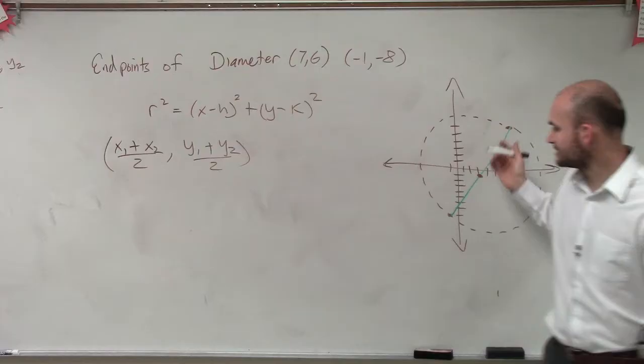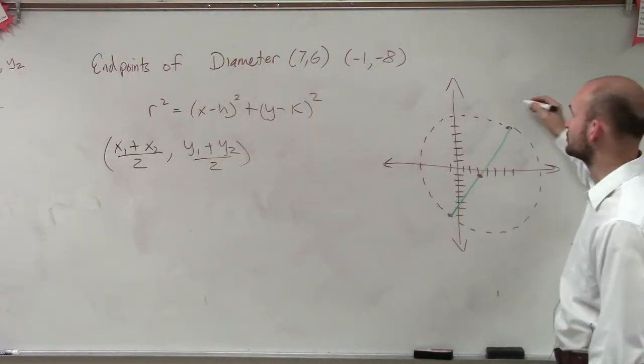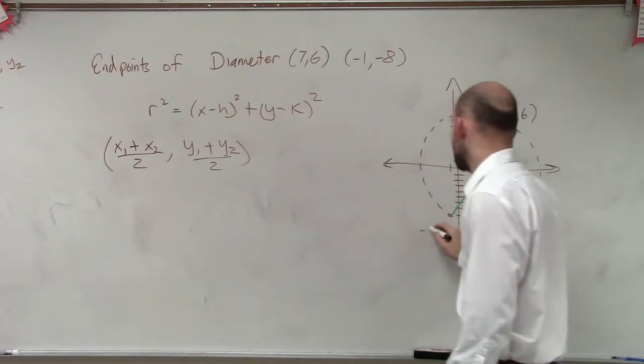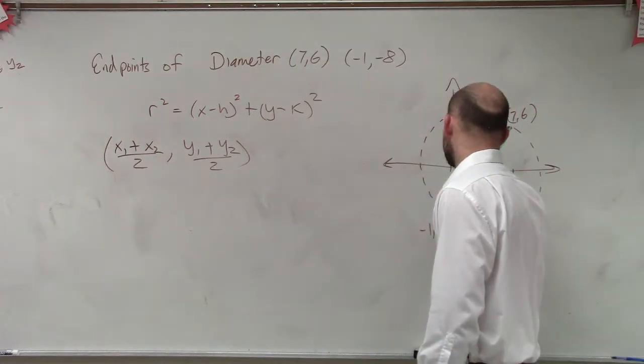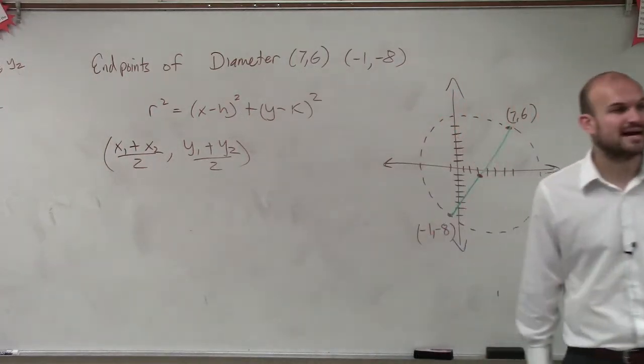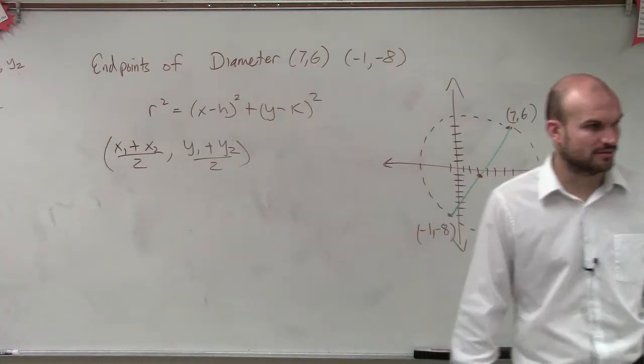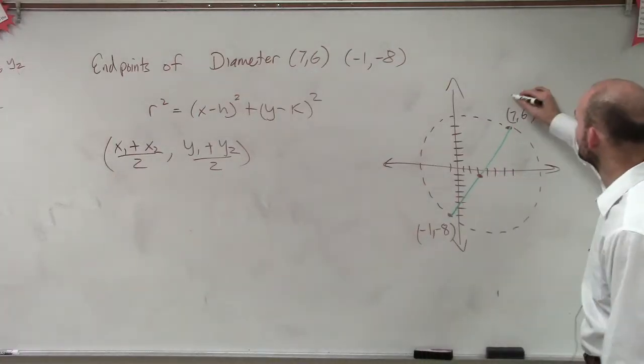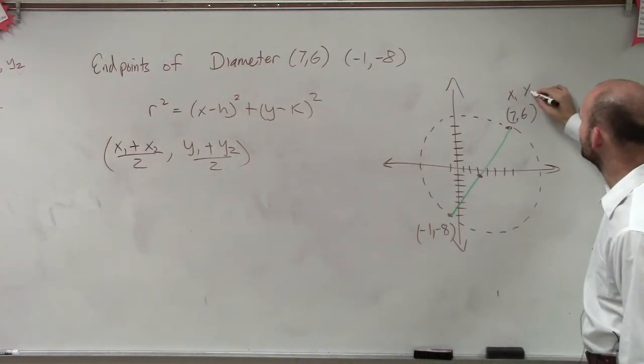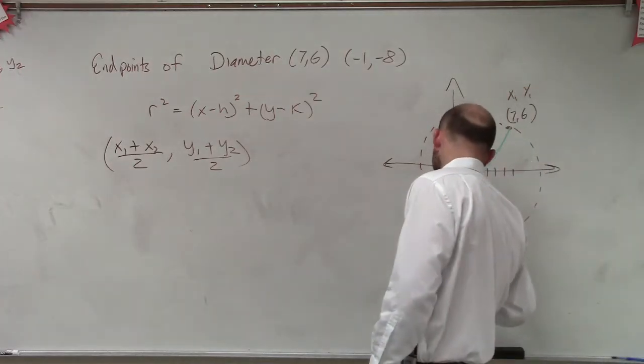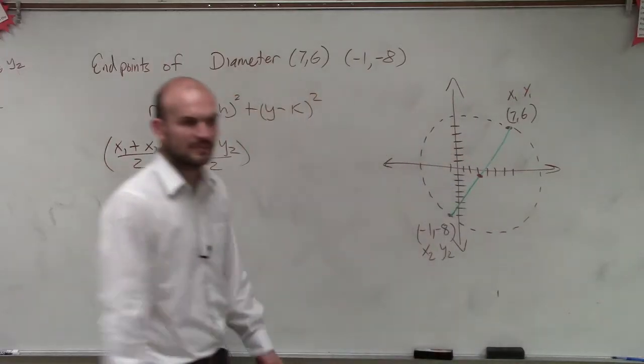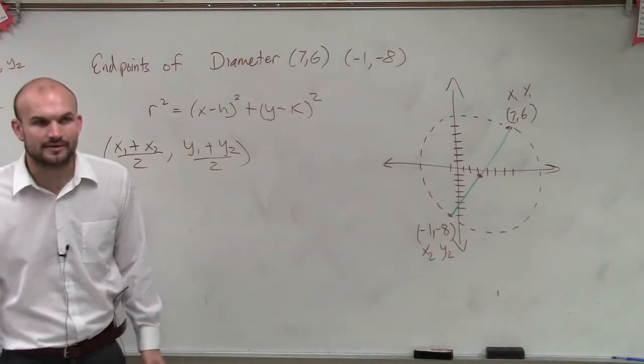So now, we just need to determine what are these points. Let's label them. So the first one was (7,6) and this one is (-1,-8). Ladies and gentlemen, it does not matter which one you want to give x₁, which one you want to give x₂. Let's do this one as x₁, this one as y₁. Here it will be x₂, here's y₂. You can label them the other way if you'd like.